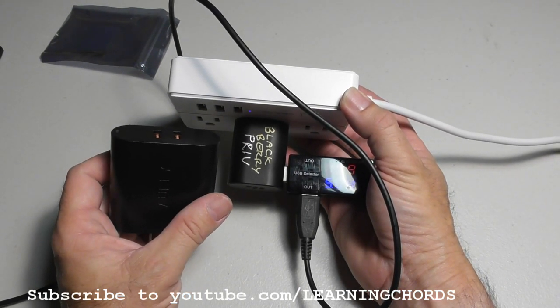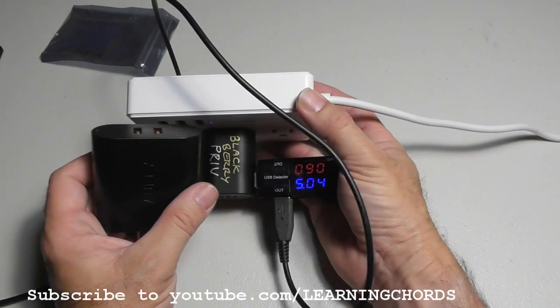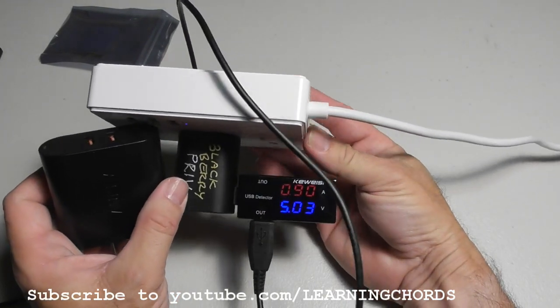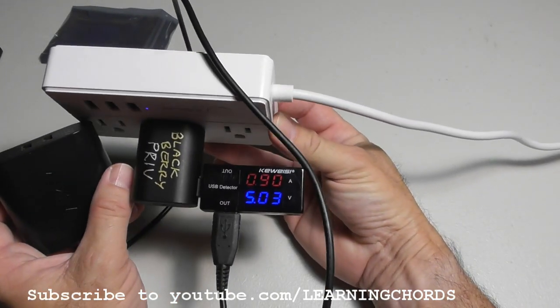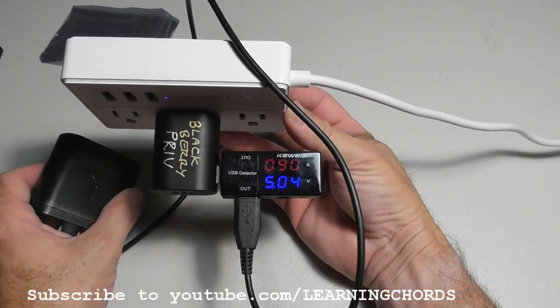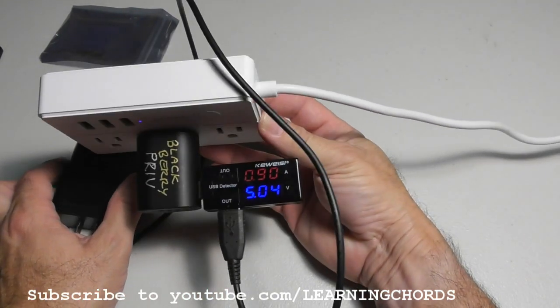And the Aukey, which is a fast charger and it's able to figure out what the battery can take, it jumps it up to a 9 volt charge. I was thinking the current charge would go way up, it would be more current going into the battery, but it's not. It's more voltage going into the battery. Very interesting.